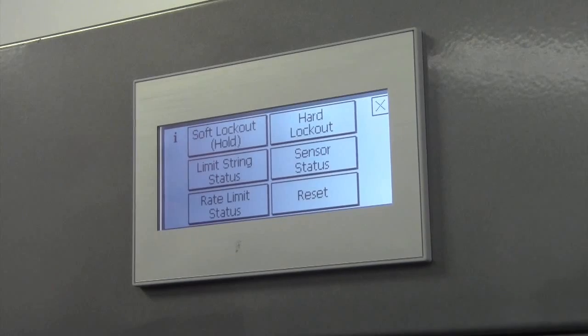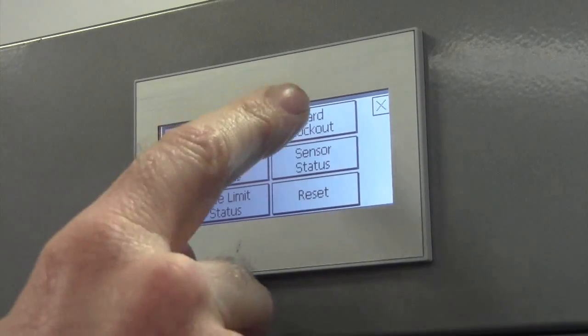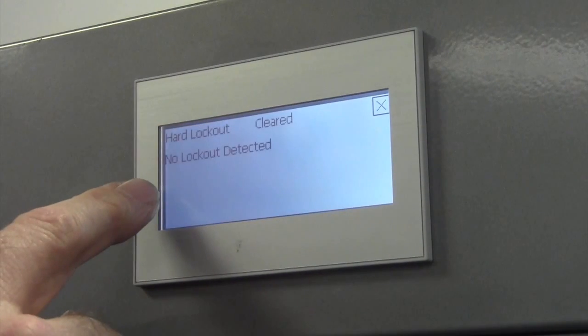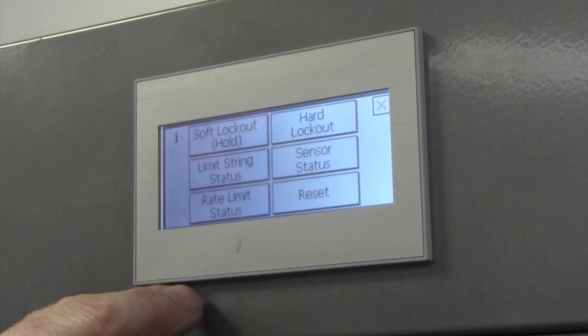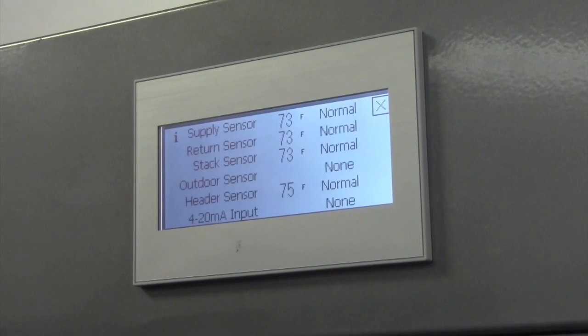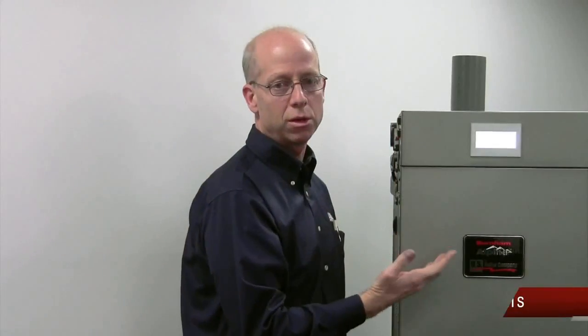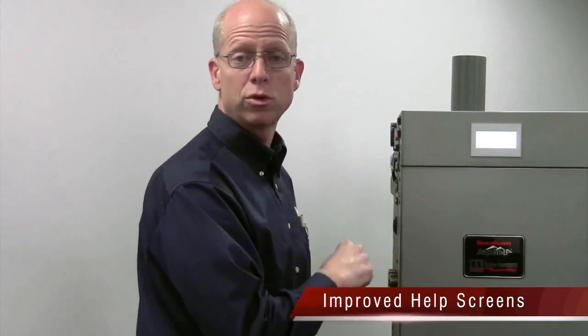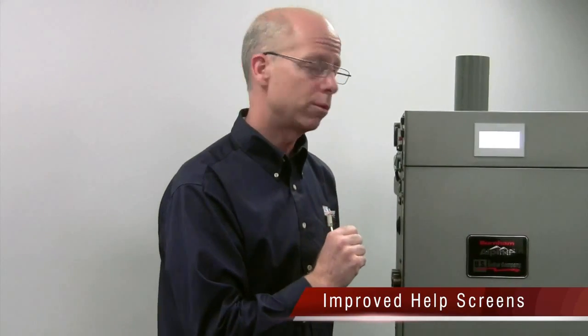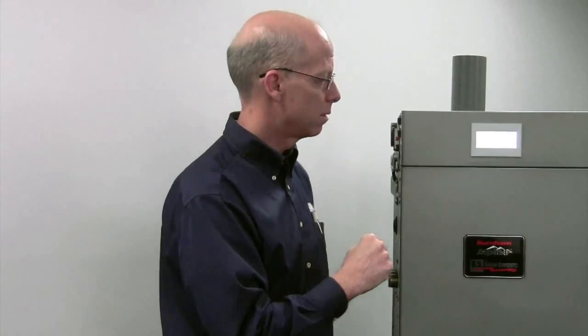Under soft lockouts and hard lockouts, I can give a full description. Under the sensor status, I can give a reading out of all your sensors. I can show you the value of all the temperatures that we're monitoring. For the 4-20 milliamp, I can give you the milliamp reading over the receiver if you have an interface from a building automation system.